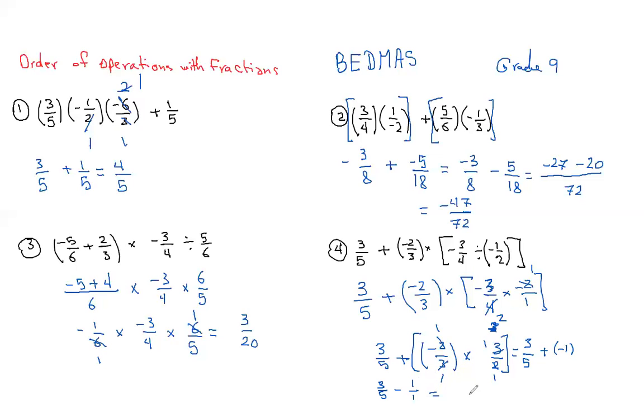Which gives me - I do a common denominator, and the common denominator is 5. 5 divided by 5 is 1 times 3 is 3, and minus, of course, 5 divided by 1 is 5 times 1 is 5.